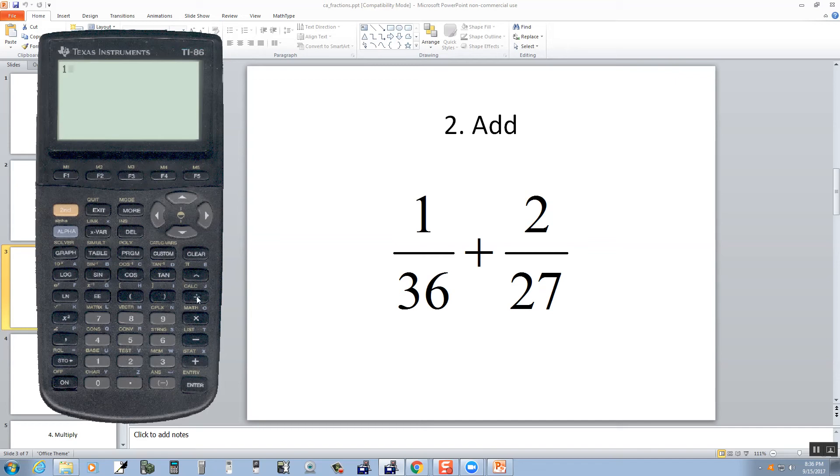So I'll do 1 divided by 36 plus 2 divided by 27. Enter. I get a decimal.